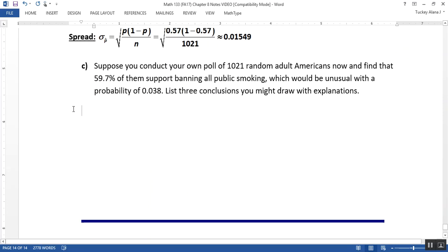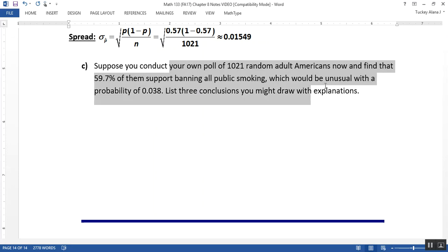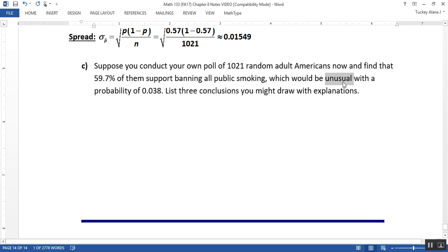Now we're on the last part, which is suppose you conduct your own poll of 1,021 random Americans, and you find that 59.7% of them support banning all public smoking. And that would be unusual. So that would be an unusual result with a probability of 0.038. So what are some reasons why that could be happening?